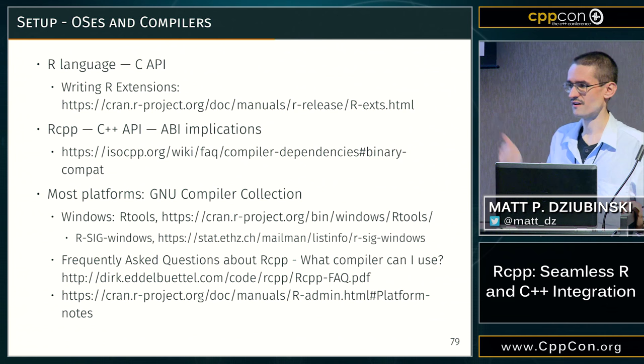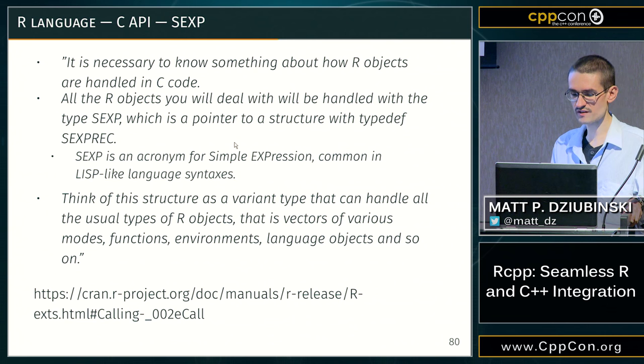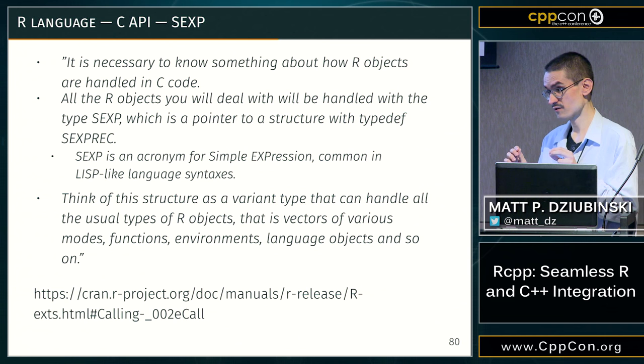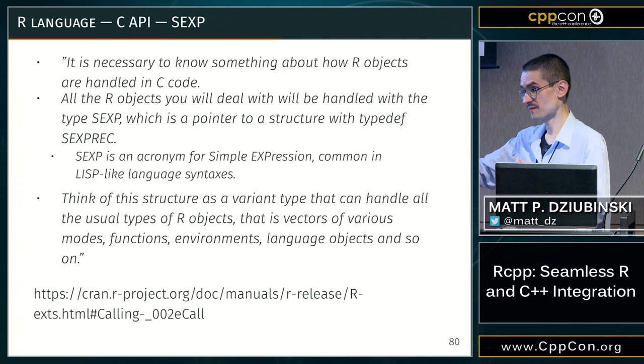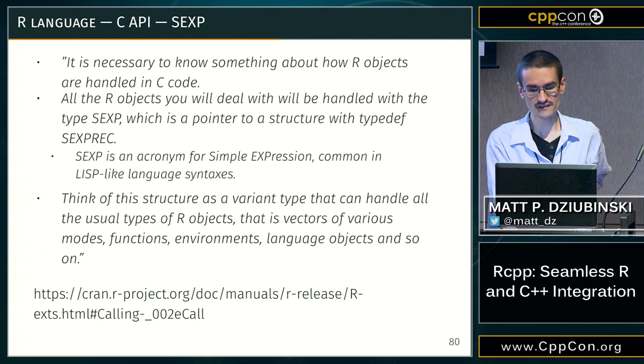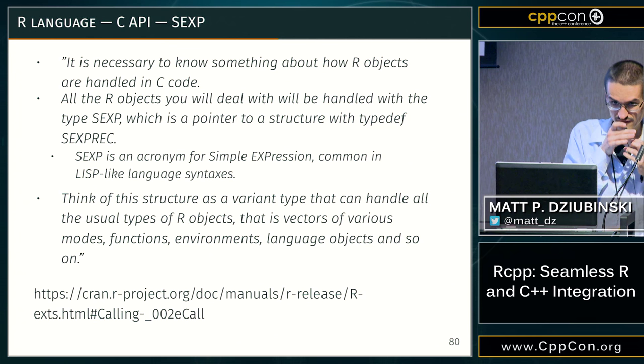So what are those SEXPs? SEXP is an acronym standing for S Expression, inspired by Lisp. It's a pointer to a structure with a typedef. The structure is kind of like a variant — similar to boost::variant — a tagged union where the tag tells you what type the object currently is. That's exactly what SEXP is, and that's how the entire interchange of data between R and native code is organized. This is also what PROTECT and UNPROTECT do.